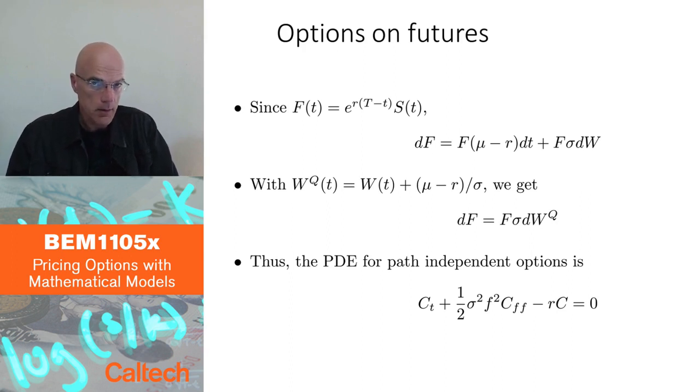It's still the same stock, so the risk-neutral probability is still the same. So W^Q is going to be the same as in the Black-Scholes-Merton model, it's going to be W plus mu minus r over sigma. If I replace dW by dW^Q, again mu and mu will cancel, and now r and r will also cancel.